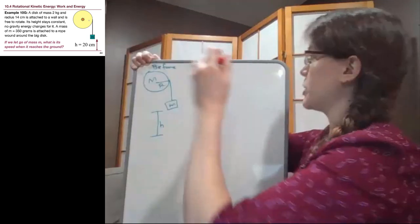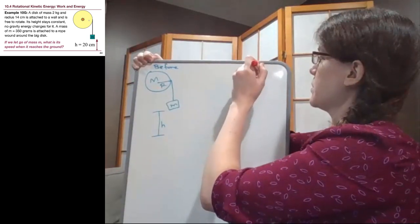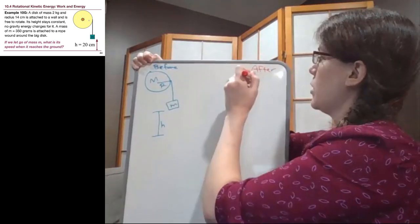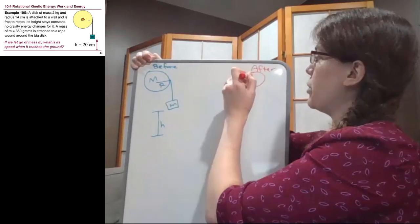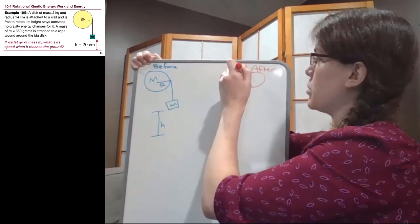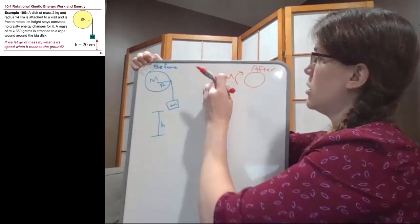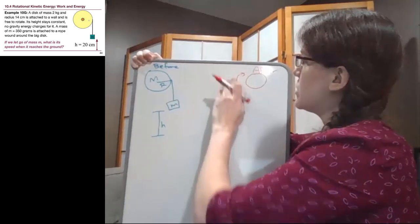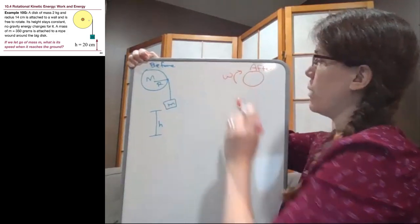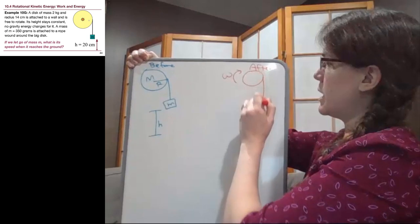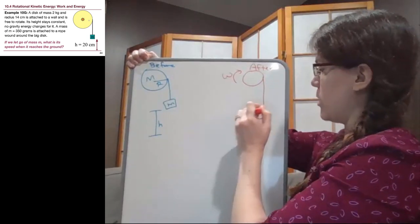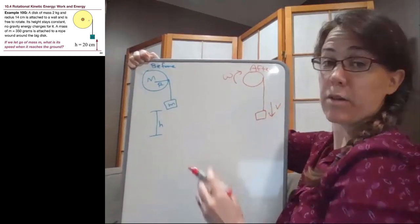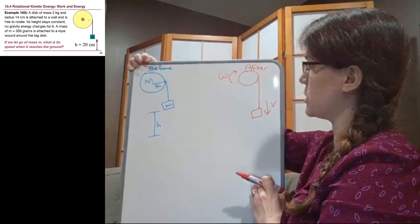In our after picture, the disk has stayed put because it has nowhere to be able to move - it's attached to the wall. But it is rotating with angular velocity omega, and the hanging mass has dropped down to the ground but is moving as it reaches the ground.